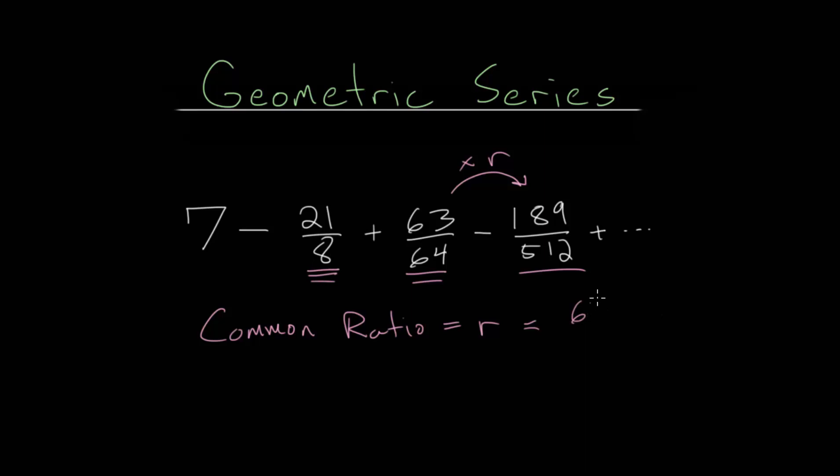So, let's set that up. We have 63 over 64, and we're dividing by this negative 21 over 8. So, make sure your signs are attached to it. And, in fact, any time you see a geometric series where the signs are alternating like this, you can be sure that your common ratio is a negative number.